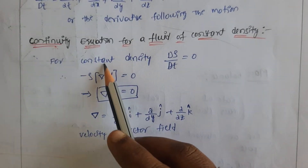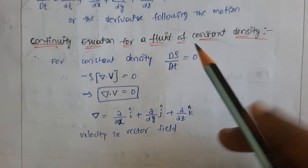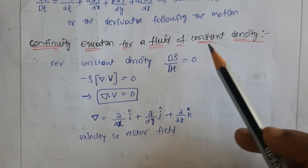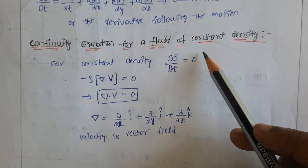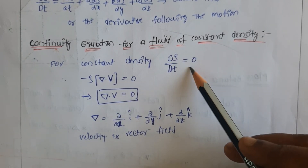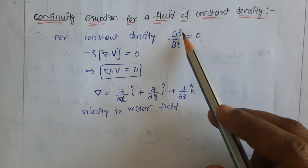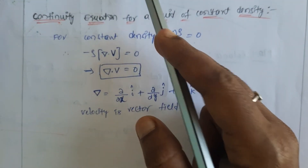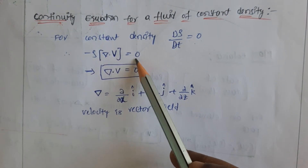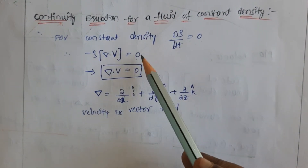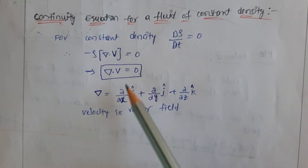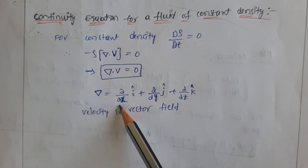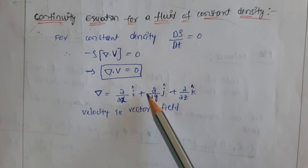For the continuity equation for a fluid of constant density, the equation becomes: for constant density, differentiation of rho with respect to time as well as with respect to space will be zero. So D(rho)/Dt equals zero. From the previous expression, by substituting this, we get ∇·v equals zero.